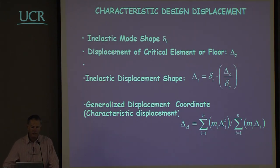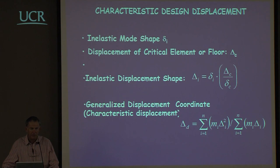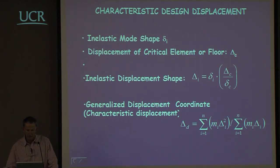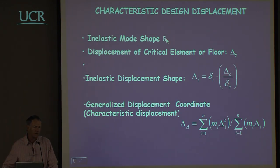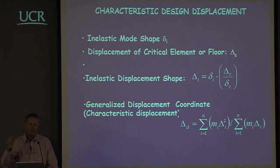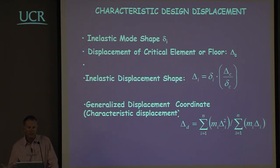The first thing is to determine the characteristic design displacement — that is the value we will use in the equivalent single degree of freedom system. To do that we need a knowledge of the inelastic mode shape. The index i refers to the various degrees of freedom of the structure — perhaps the number of stories in a building or the number of piers and abutments in a bridge. We need some idea of what that displaced shape looks like, not numerically but as a dimensionless mode shape.